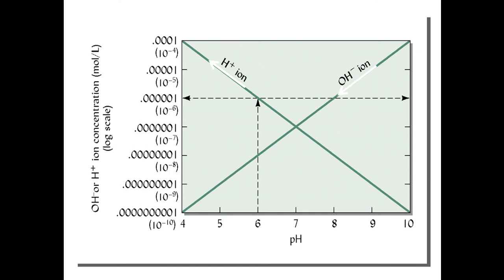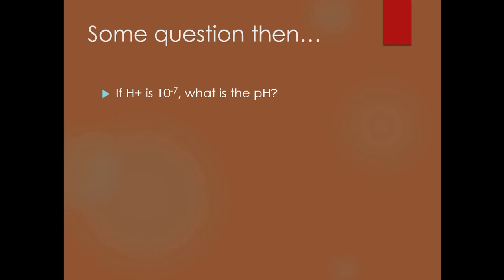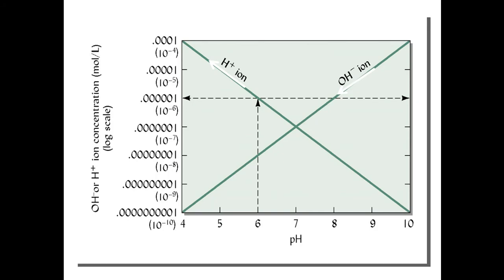Here is a graph depicting soil pH. At a pH of 7 we are considered neutral, and the scale goes from 1 to 14. This is a snapshot of where most soils will be found. At a pH of 7, we have a balance of hydrogen ions and hydroxide ions. So if the hydrogen ion concentration is 10 to the negative 7, then the pH is 7. If the hydrogen ion concentration is 10 to the negative 6, we'd have a pH of 6. That is how the scale works.